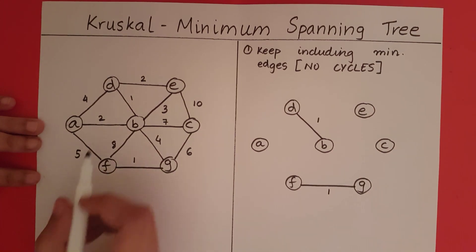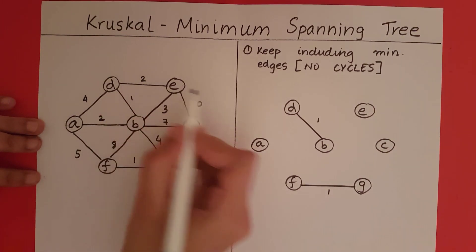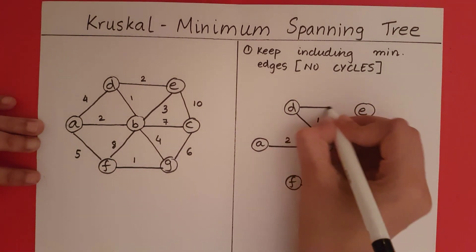Now in this set, what is the minimum edge? We have a 2 here and a 2 here. So first I'll include this, then I'll include this.